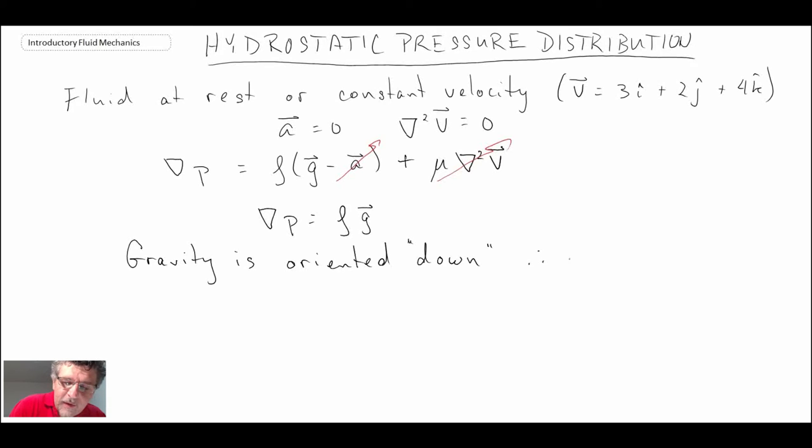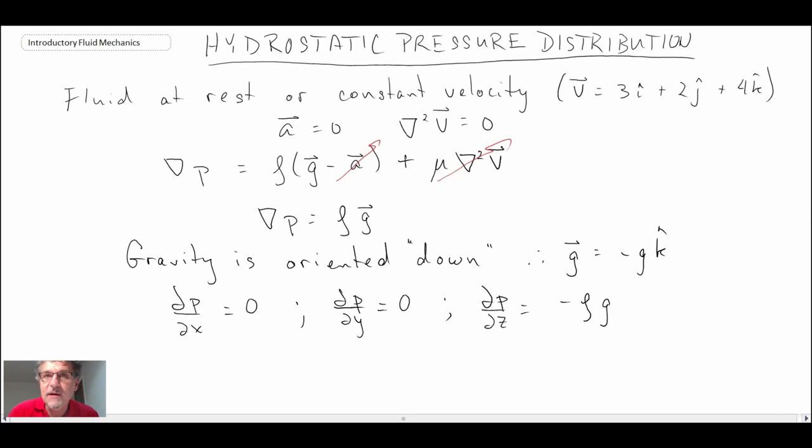So what we can say is that g is minus gk. And with that, writing out the gradient terms, what we have is dp by dx is zero, dp by dy would be equal to zero because there's no component on the right-hand side in either the i or the j direction. And finally, dp by dz is the only term that would exist, and that would equal minus rho times g, the gravity vector, or the scalar value of the gravity.